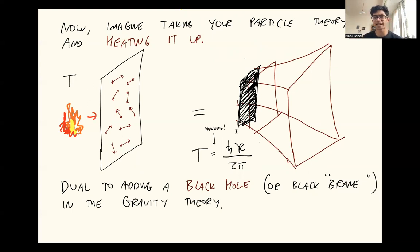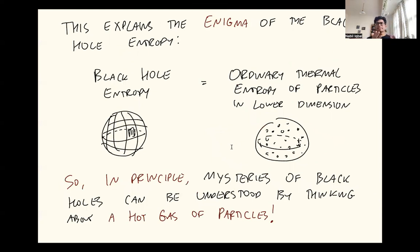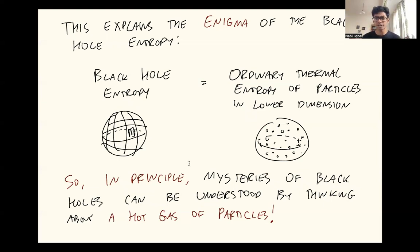So in other words, heating something up corresponds to adding a black hole. When I say black hole, it turns out in this theory you can also have rectangular black holes called black branes — but it's really the same idea. Putting a temperature corresponds to putting a black hole into the gravitational theory. Note that this now explains the enigma of the black hole entropy. This confusing black hole entropy we can now just think of as being the ordinary thermal entropy of these particles bouncing around in one lower dimension. That is why it goes like the area and not the volume.